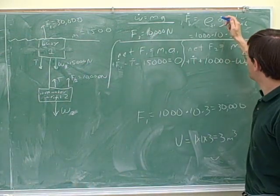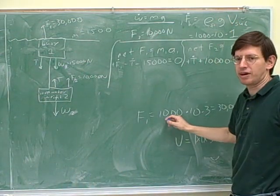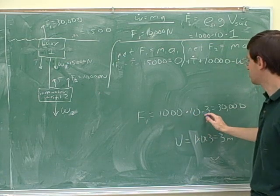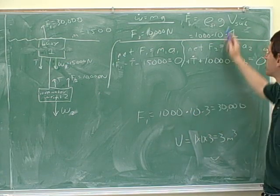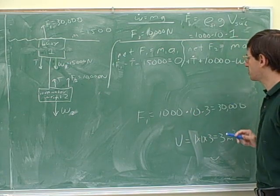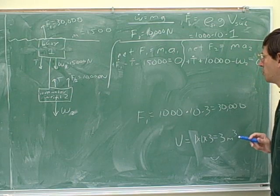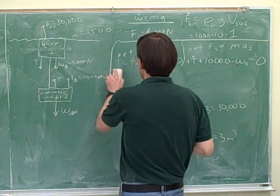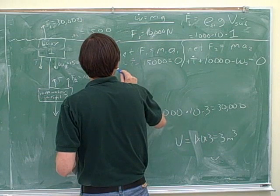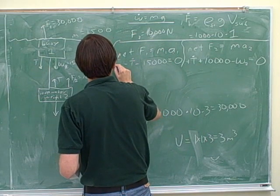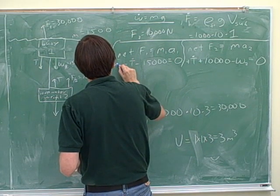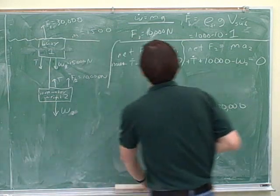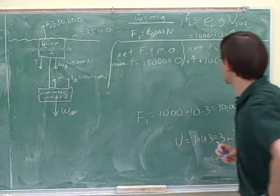So the problem reminded us that the density of water was 1,000, and here's g, and here's the volume of the portion submerged using this formula. So then we'll plug that in: 30,000. Positive or negative? It's positive — positive 30,000.